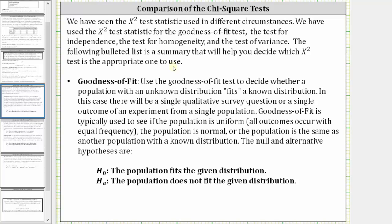First we have goodness of fit. Use the goodness of fit test to decide whether a population with an unknown distribution fits a known distribution. There will be a single qualitative survey question or a single outcome of an experiment from a single population. Goodness of fit is typically used to see if the population is uniform, meaning all outcomes occur with equal frequencies, the population is normal, or the population is the same as another population with a known distribution.